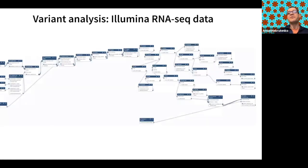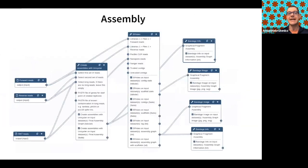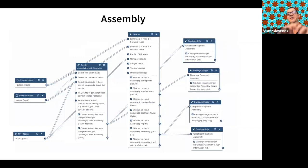The workflows we are producing are complex. For example, detection of variants from RNA-seq data, an assembly workflow specifically for a hybrid situation where you have short and long reads using SPAdes and Unicycler — Unicycler is a mega-wrapper on top of SPAdes — but that workflow allows you to compare things.